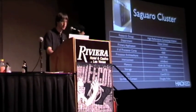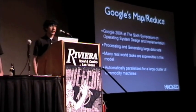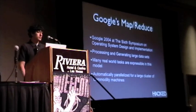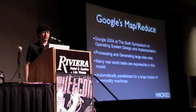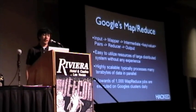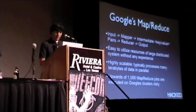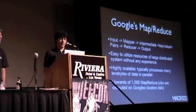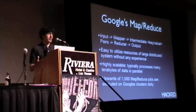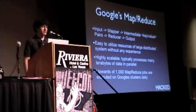In 2004, Google released a paper basically outlining their MapReduce framework. They had a huge problem processing and generating large data sets, so they invented MapReduce to solve it. Many real-world tasks are expressible in this model and it's been automatically parallelized for large clusters of commodity machines. The basic workflow is: get your input data, run it through your mapper, the mapper outputs intermediate key-value pairs which get passed to the reducer, and the reducer produces your output. It's highly scalable — designed to scale from a couple gigabytes up to terabytes — and Google runs about 1,000 MapReduce jobs a day.